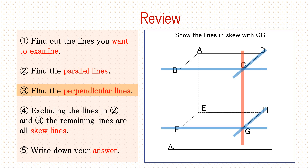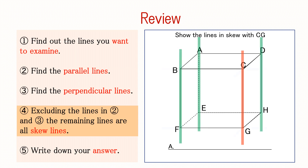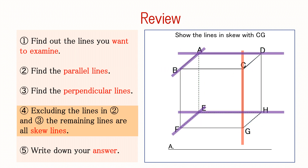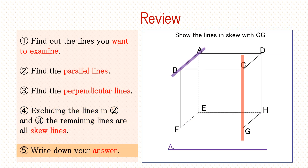Next, let's find the lines that are perpendicular to line CG. The four lines perpendicular to line CG are lines BC, CD, FG, and GH. Next, we exclude the parallel and perpendicular lines that we have just obtained. Doing so, the remaining four lines are AB, AD, EF, and EH. These four lines are skew lines. Finally, write down your answer. Be careful not to leave anything out.